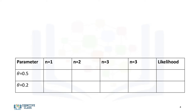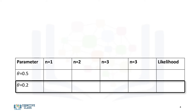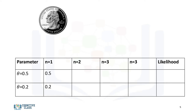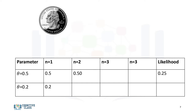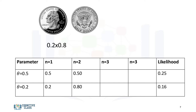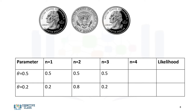Now consider the case where we don't know the likelihood. Let's record the likelihood for two different values of the parameter: theta equals 0.5 and theta equals 0.2. For the first flip, the likelihood of observing a head for theta equals 0.5 is 0.5, and for theta equals 0.2 it is 0.2. For the second flip, which is tails, the likelihood for theta equals 0.5 is 0.25, and for theta equals 0.2 it is 0.16. For the third flip, the likelihood for theta equals 0.5 is 0.125, and for theta equals 0.2 it is 0.032.